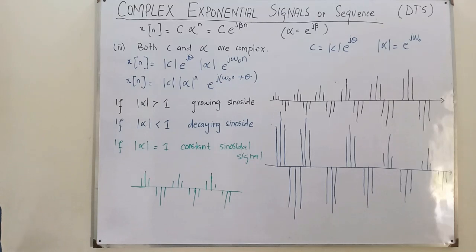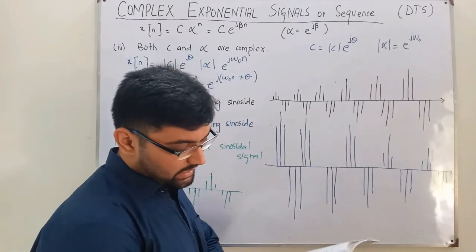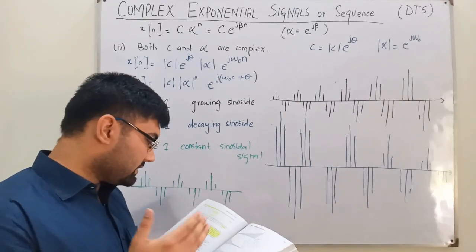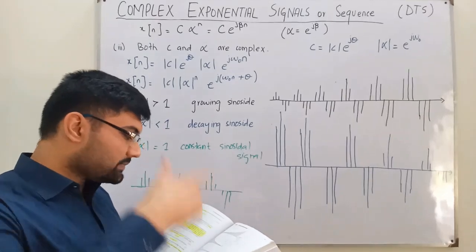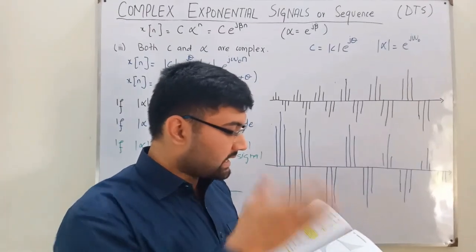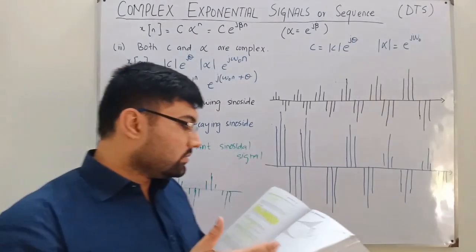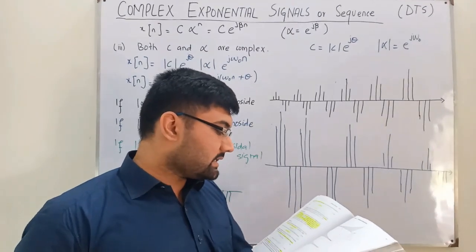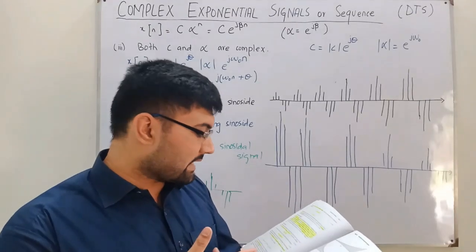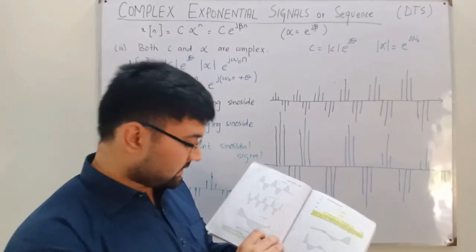Reviewing from the book: the discrete time complex exponential signal x of n equals C times alpha to the power n is a real exponential. If the magnitude of alpha is greater than one it grows, if less than one it decreases. If alpha is positive the signal stays on one side; if alpha is negative it alternates. If alpha equals one, x of n is constant equal to C. If alpha equals negative one, x of n alternates between plus C and minus C. The purely imaginary case gives sinusoidal signals with infinite total energy but finite average power.